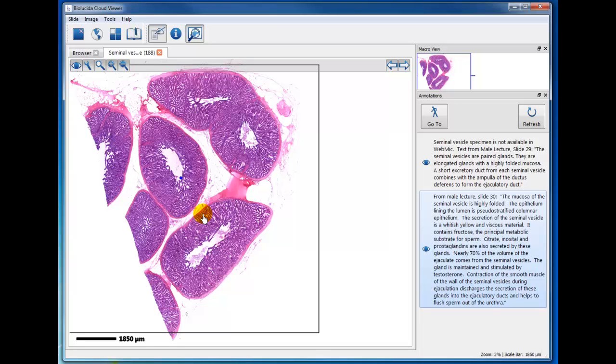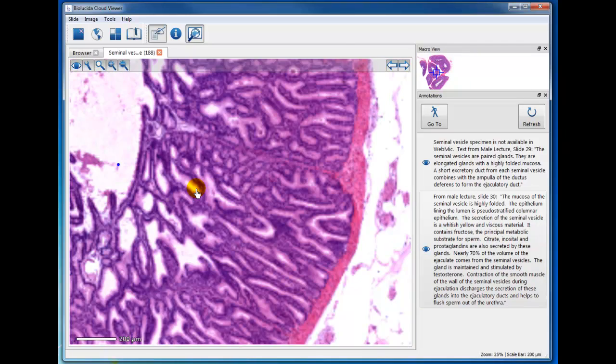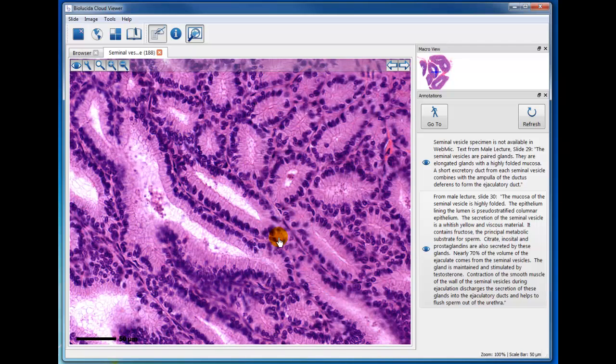Each one of these cross-sections of tubes will have a highly folded mucosa where you can just barely see the connective tissue between. And it's reported in textbooks that this is pseudo-stratified columnar epithelium.